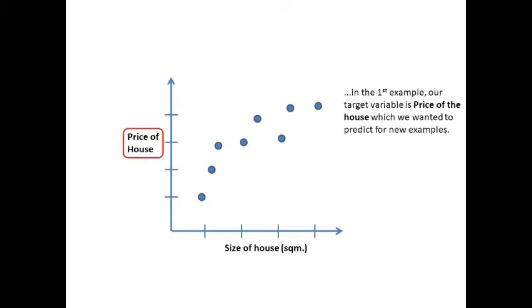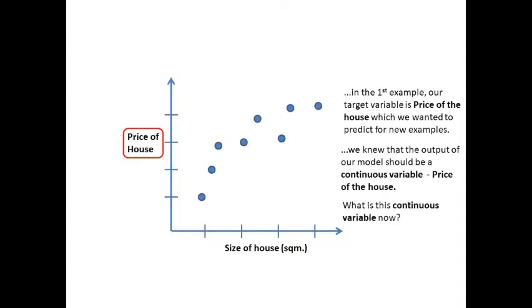In the first example, our target variable is price of the house, which we wanted to predict for new examples. We knew that the output of our model should be a continuous variable: price of the house.